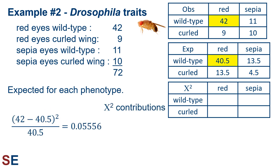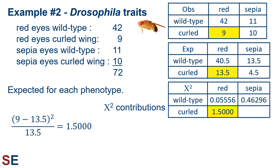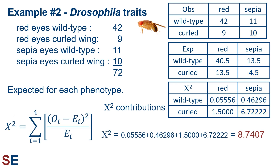Now we calculate the chi-squared terms. For red-eyed wild-type: (42 − 40.5)² / 40.5 = 0.05556. For sepia-eyed wild-type: (11 − 13.5)² / 13.5 = 0.46296. For red-eyed curled wing: (9 − 13.5)² / 13.5 = 1.500. Finally, for sepia-eyed curled wing: (10 − 4.5)² / 4.5 = 6.72222. Adding all these terms gives a final chi-squared value of 8.7407. Most of this comes from the larger-than-expected number of double recessive phenotype individuals.